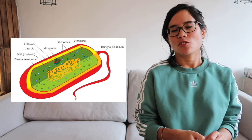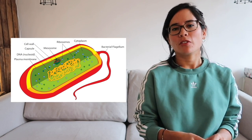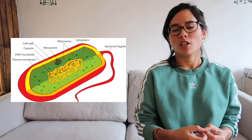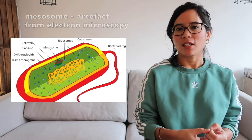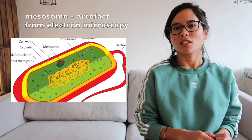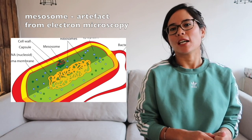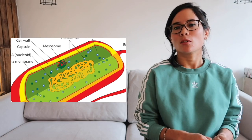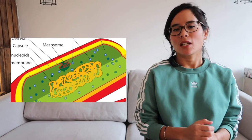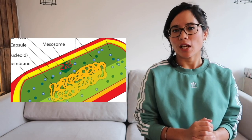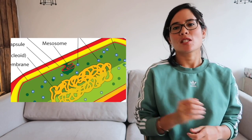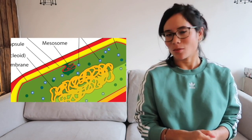The mesosome is a structure which people for a very long time didn't know the function of. It is in fact an artefact — an artificial thing that humans have accidentally introduced to the bacterial cell through electron microscopy. These small artefacts end up deposited on the bacterial cell but have nothing to do with the bacteria itself.